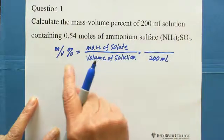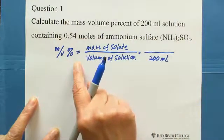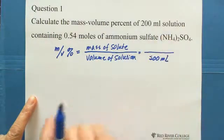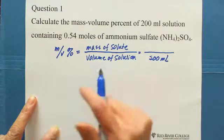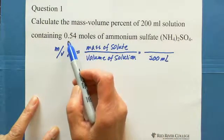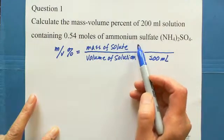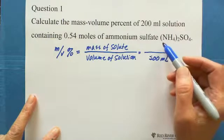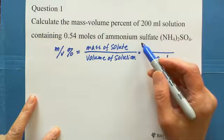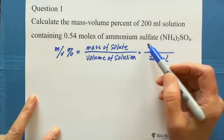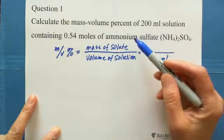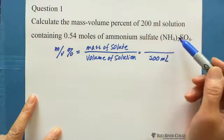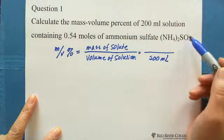Before we find the mass volume percent, we need to first solve the mass of solute. The mass of solute comes from 0.54 moles of ammonium sulfate — that's (NH4)2SO4.